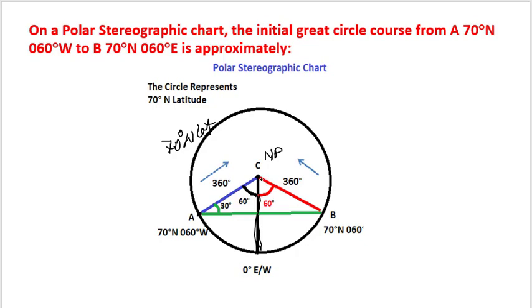Similarly, point BC is 60 degrees to the right or east and is 60 degrees east longitude. Both the points are on the 70 degrees latitude circle, so the latitude will be 70 degrees.